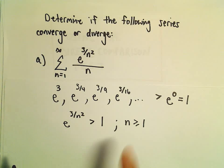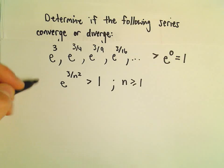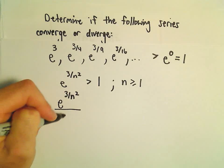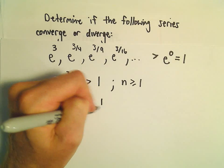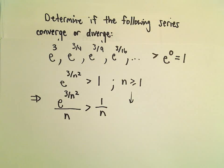As long as it's valid for n greater than or equal to 1, that's all that really is important for us. Well, if this is true, e raised to the 3 over n squared, if we divide that by n, that's going to be larger than 1 over n. Again, for n greater than or equal to 1.